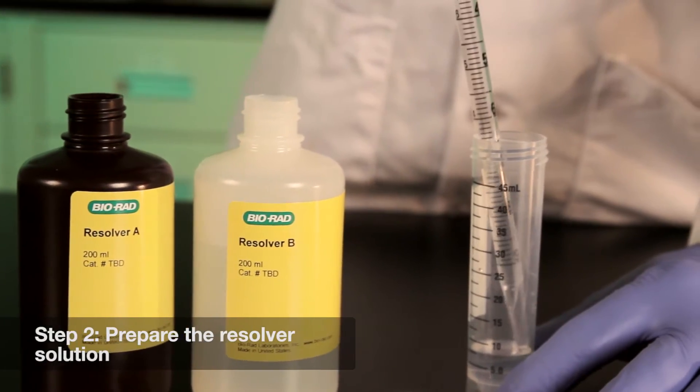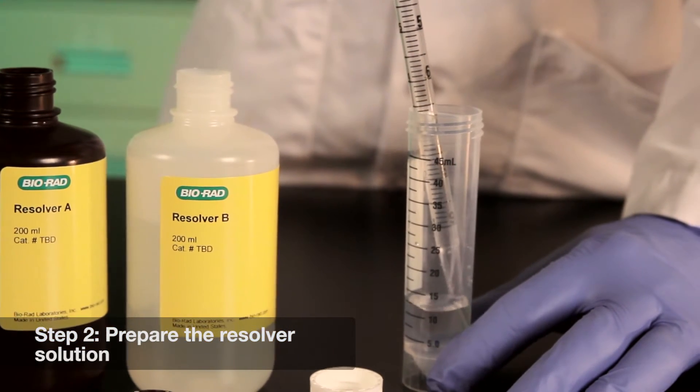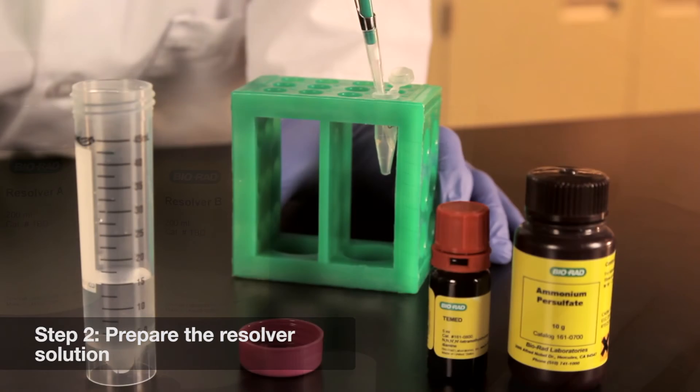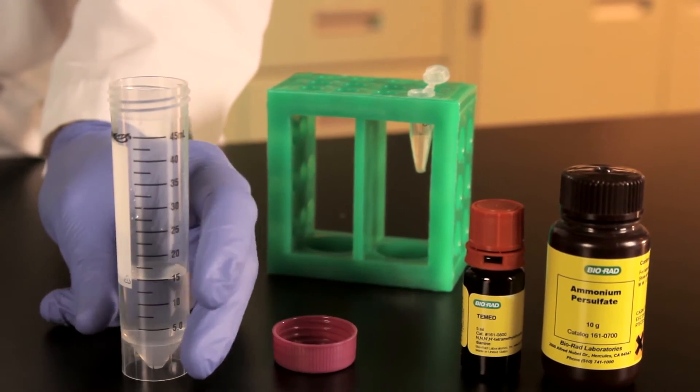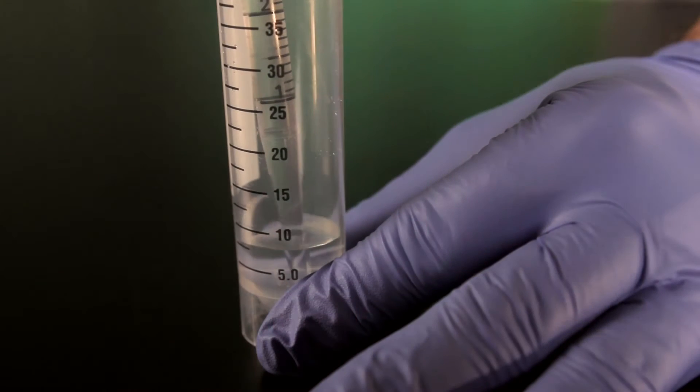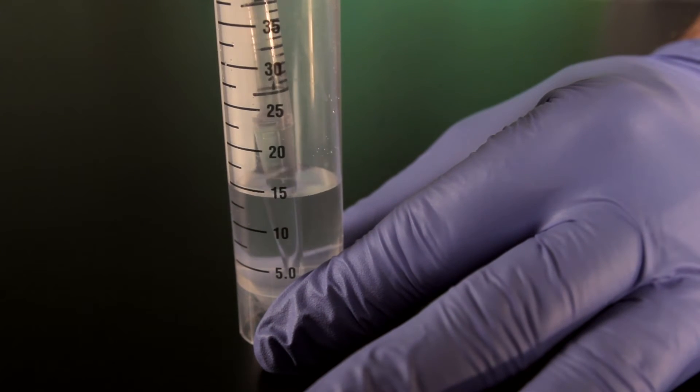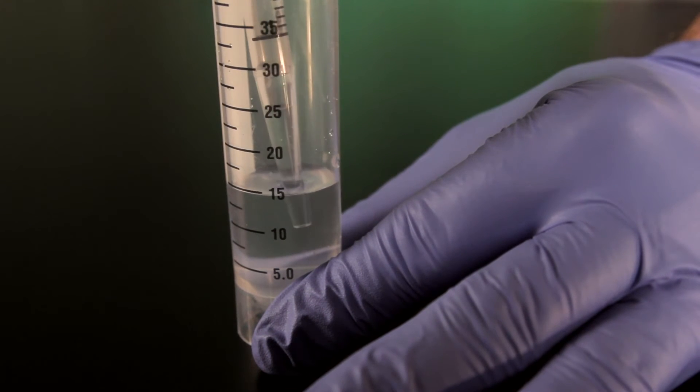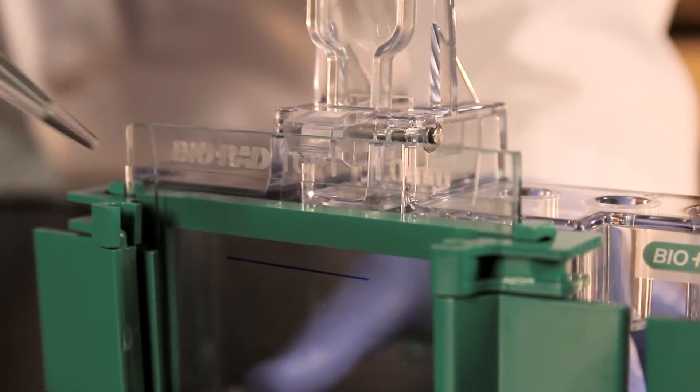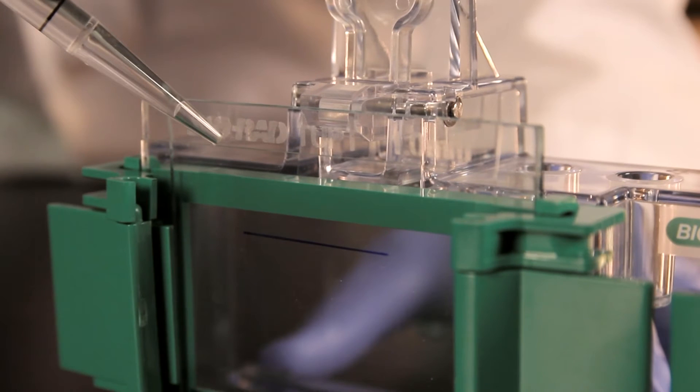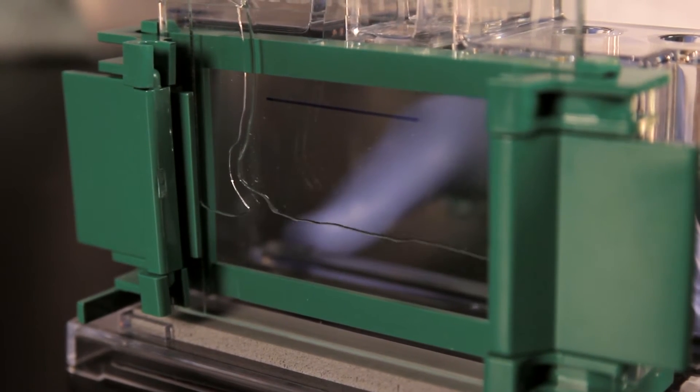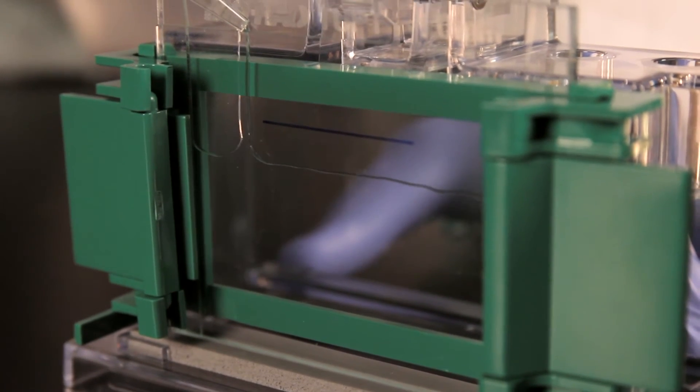Next, prepare the resolving gel acrylamide solution by combining equal volumes of the resolver A and B solutions. Add the appropriate volumes of TMED and freshly made 10% APS to the combined resolving solution. Mix the solution, taking care to avoid introducing air bubbles. Now remove the comb and pour the resolving solution into the cassette smoothly to prevent it from mixing with air. For fastest results, the stacking gel can be poured without waiting for the resolving gel to polymerize.